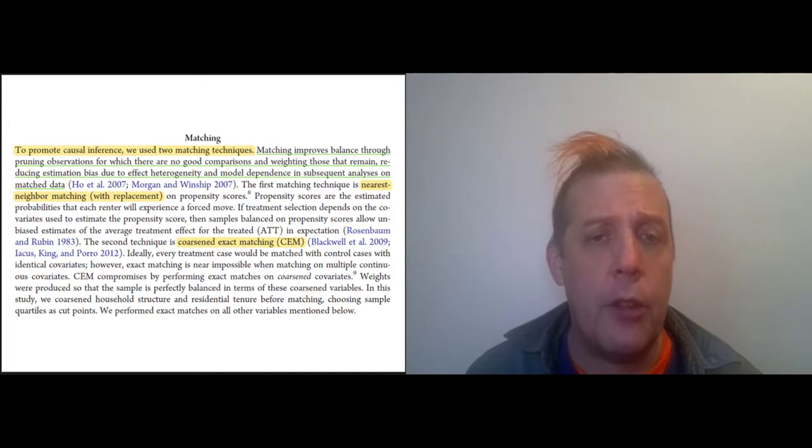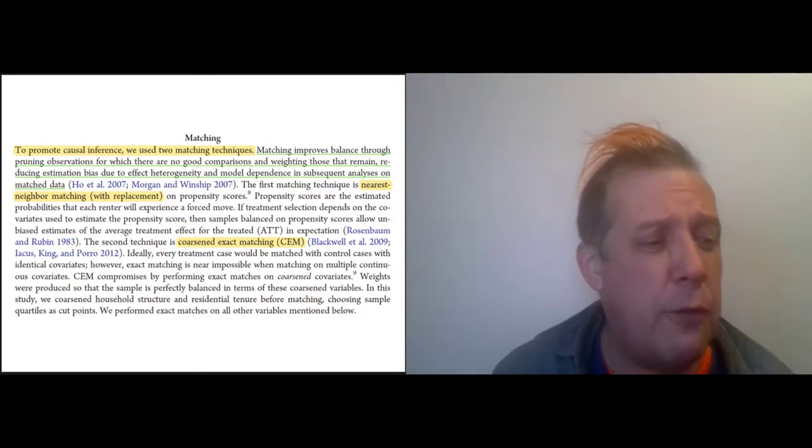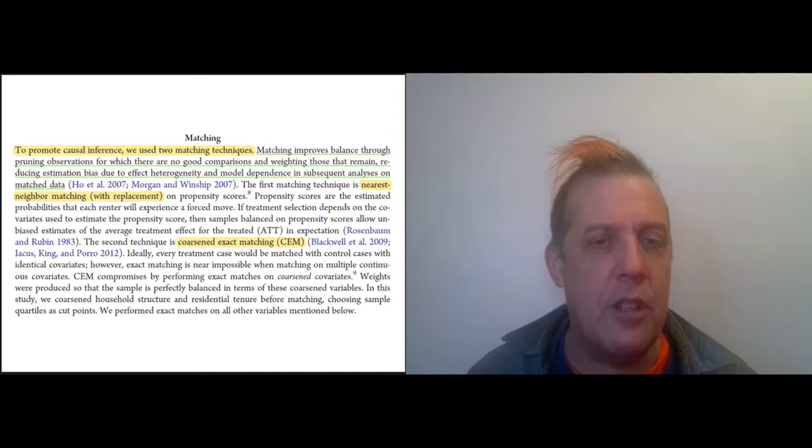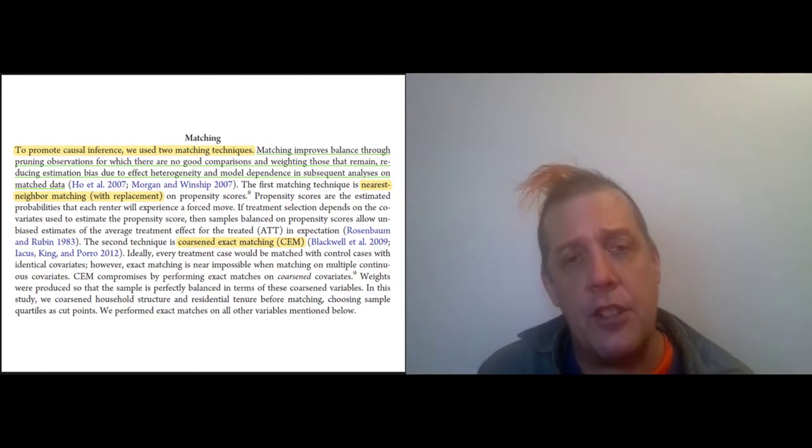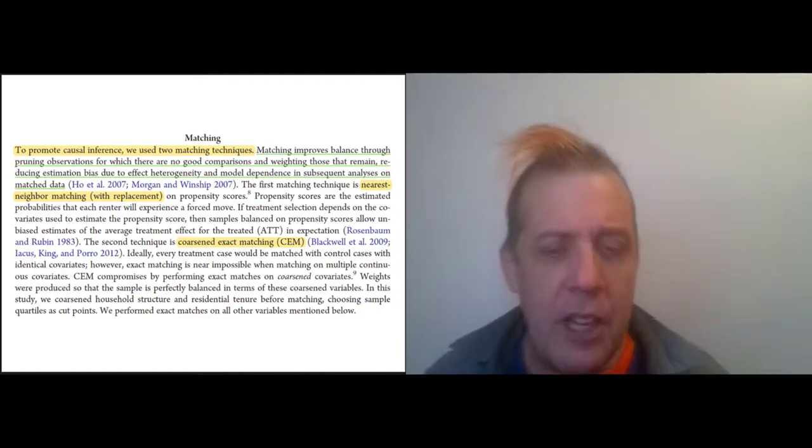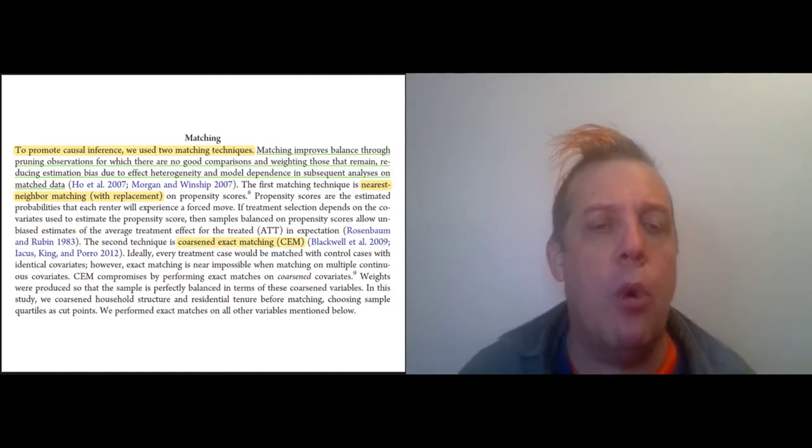They were able to show that you can explain job loss in terms of previous eviction and rule out other factors. So other factors they looked for, for instance, were relationship loss—people get divorced, that might cause both losing your job and your apartment—and also a history of job loss. So once you lose one job, it becomes easier to lose more. So those are third factors that they were able to rule out in this way.